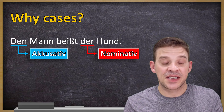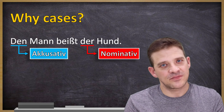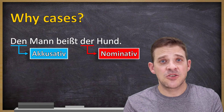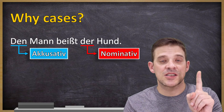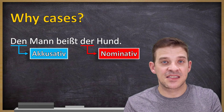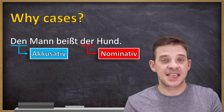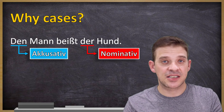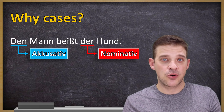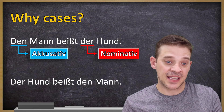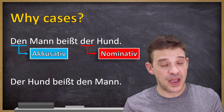And 'der Hund' uses a nominative article. After this video you will know that nominative is always for the subject and accusative is always for an object. Because the subject is the main character in a sentence, it would actually be clearer to say 'der Hund beißt den Mann.' So that's why we have cases.